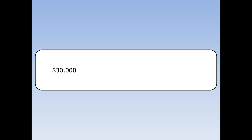Eight hundred and thirty thousand. I can't choose eighty-three, because it's bigger than ten. So I need to choose eight point three. Eight hundred and thirty thousand is eight point three times a hundred thousand, which is equal to eight point three times ten to the power of five. Eight point three is between one and ten, times ten to the something — this is standard form.